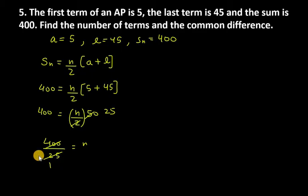Therefore, n equals 400 over 25. Simplifying this, we get n equals 16.